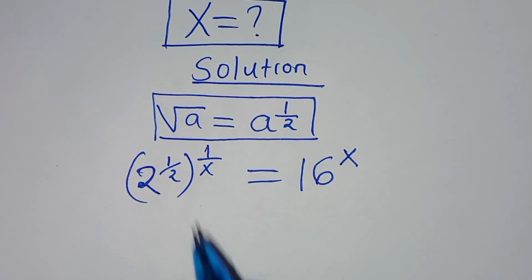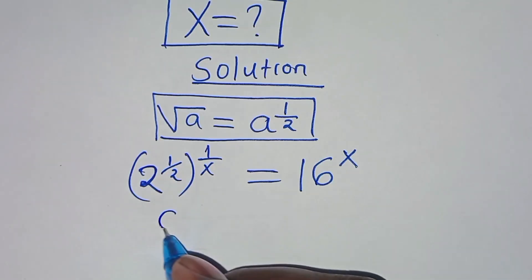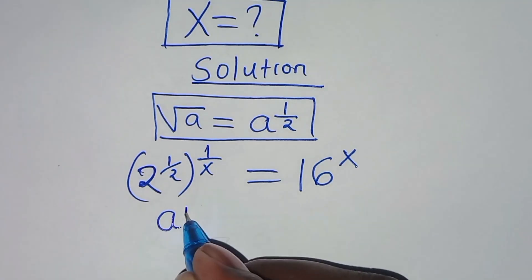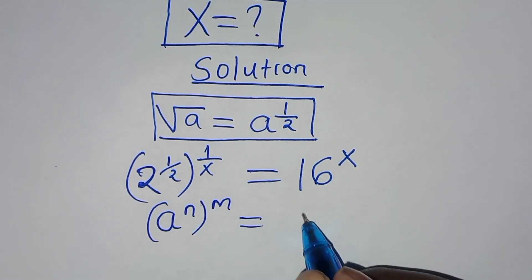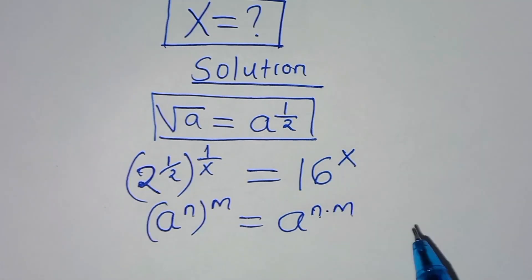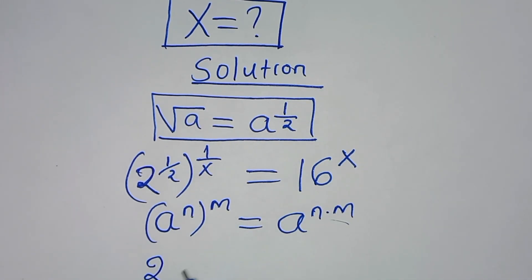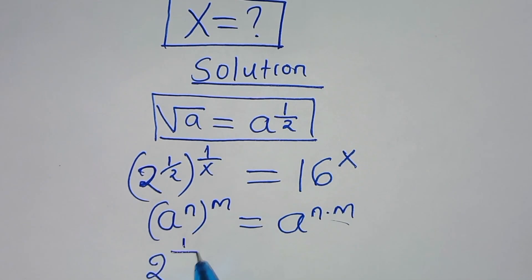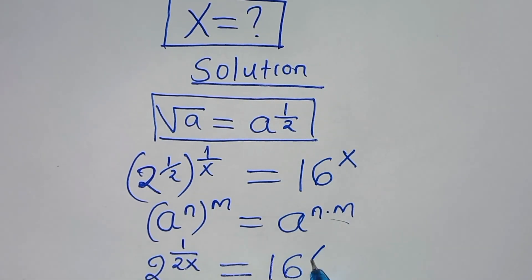From here, 2 to power 1/2 raised to power 1 over x is in the form of a to power n raised to power m, which we can express as a to power n times m. Applying this exponent property, we have 2 to power 1 over 2x, and this is equal to 16 to power x.